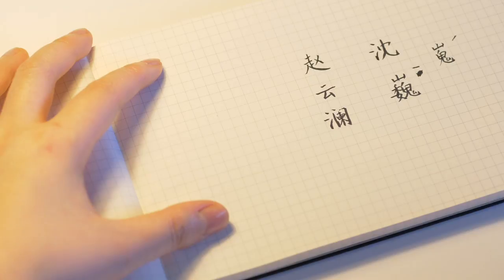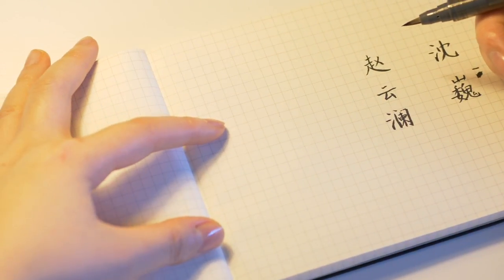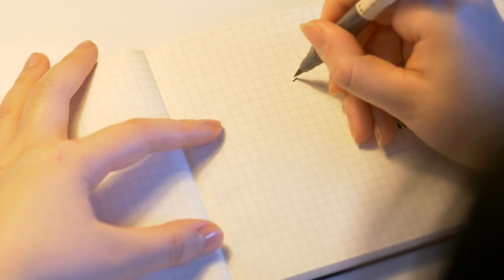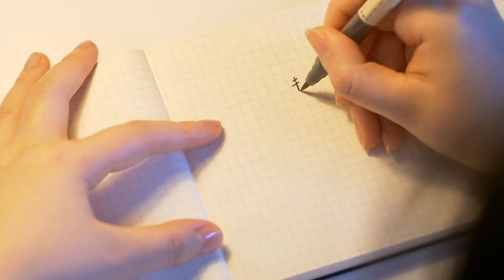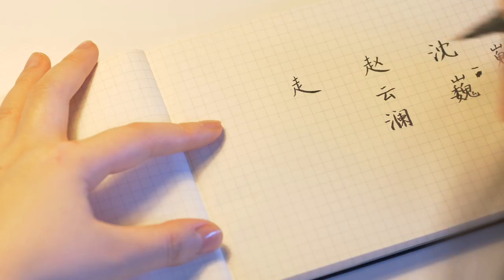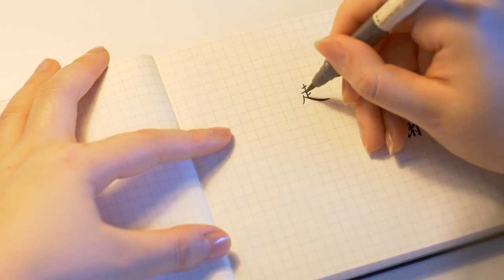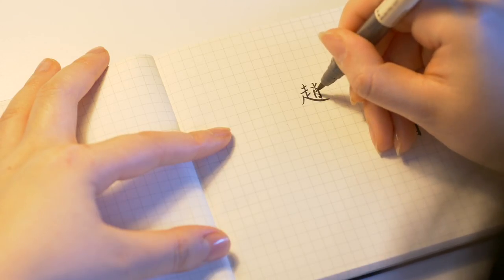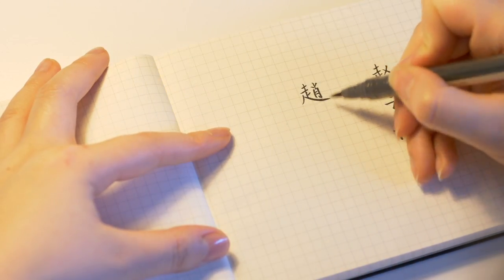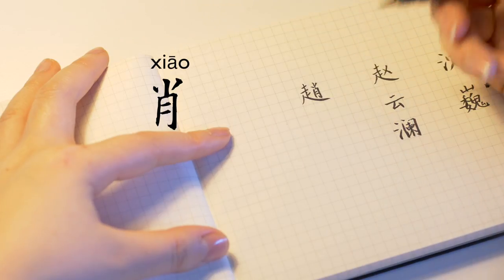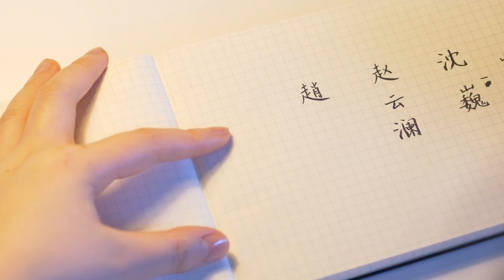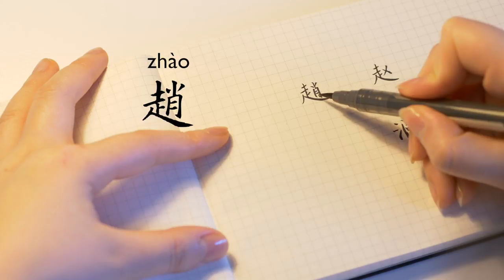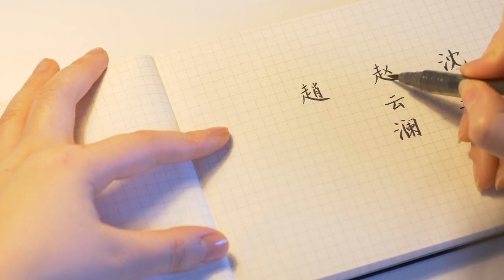If you want to write the traditional characters it will look very different, so let me write it on the side so that you can compare them. The traditional version of Zhao, the left side is the same, also a character that means walk. The difference comes on the right side. The original Zhao, this character is Xiao, it's also a surname just on itself, such as the actor Xiao Zhan has that as his surname. This together is traditional way of writing Zhao, so the simplifying thing happens with the right part.